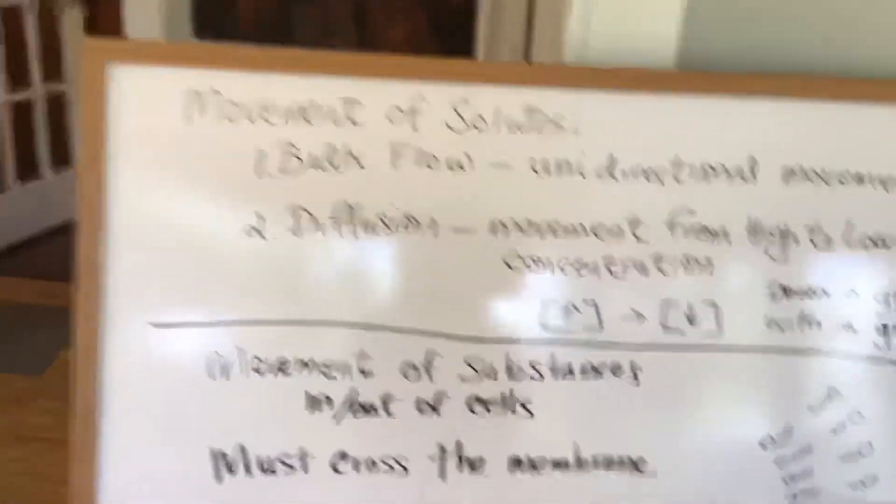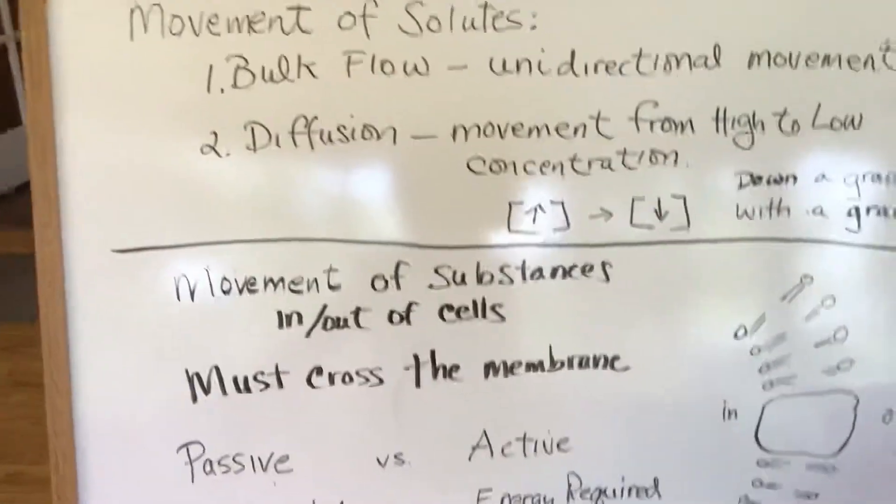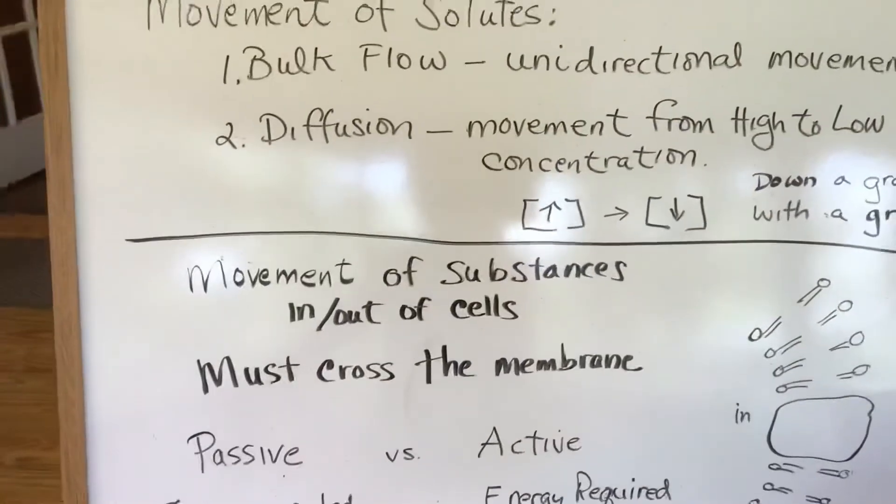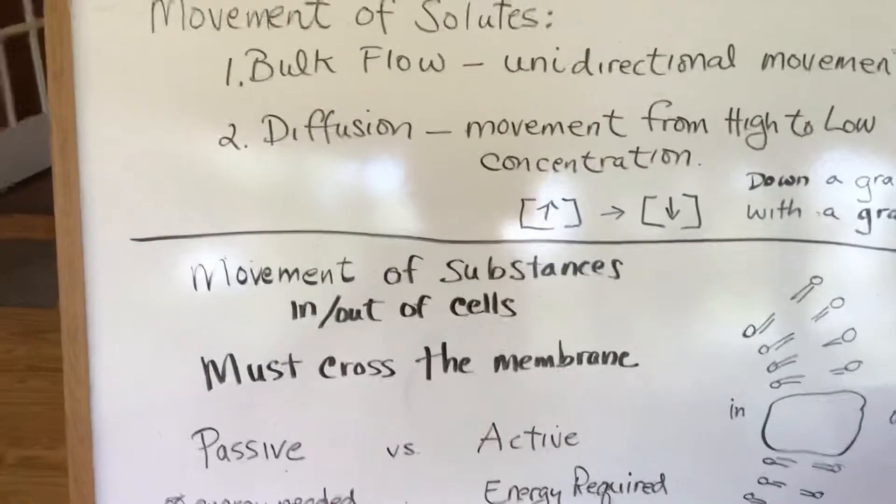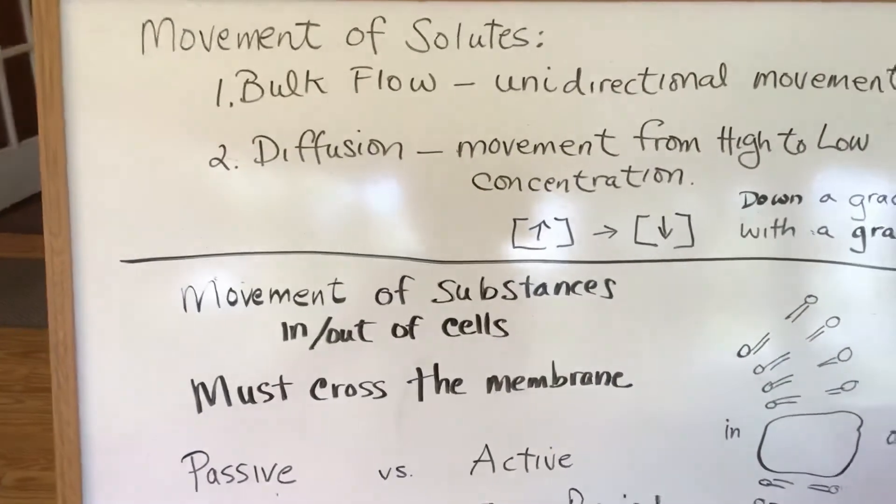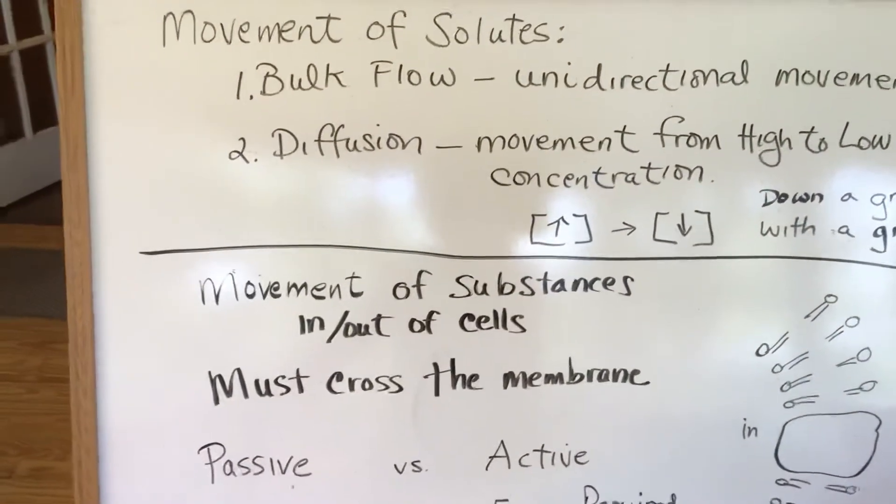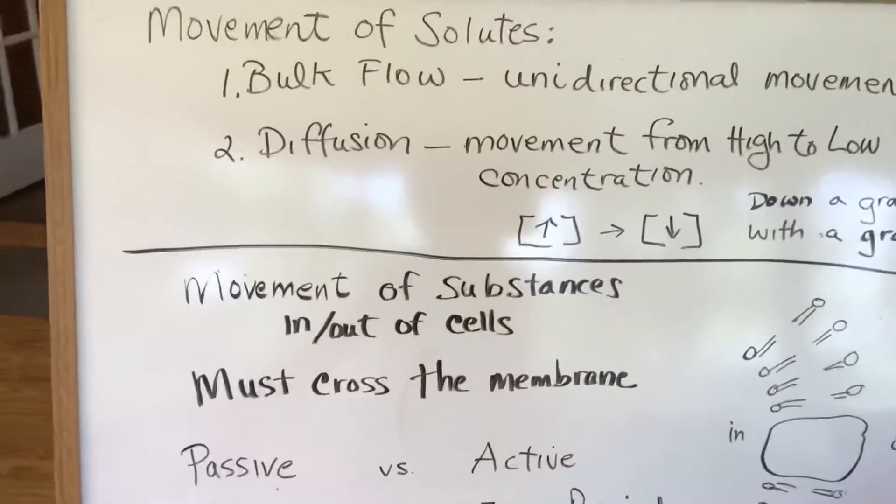So the next subject that we're going to talk about is the movement of substances in and out of a cell. And that will require the crossing of a membrane, that is, the cell membrane. So we're going to have a little discussion about the cell membrane.